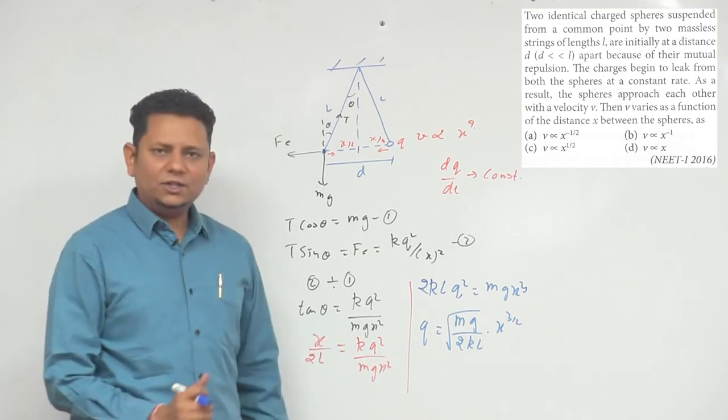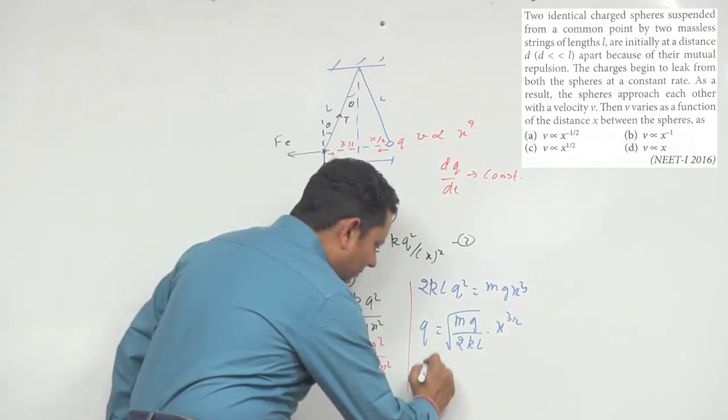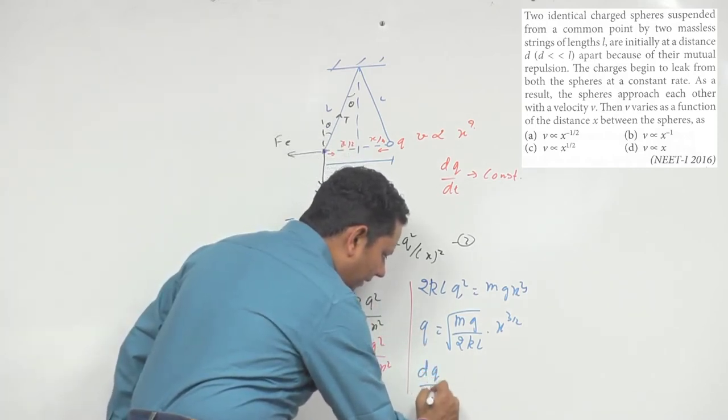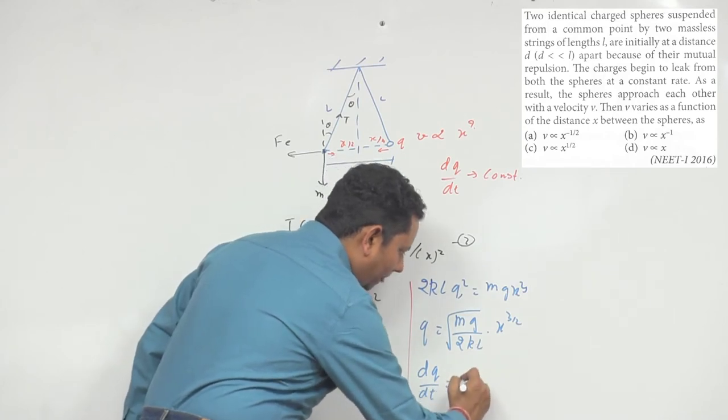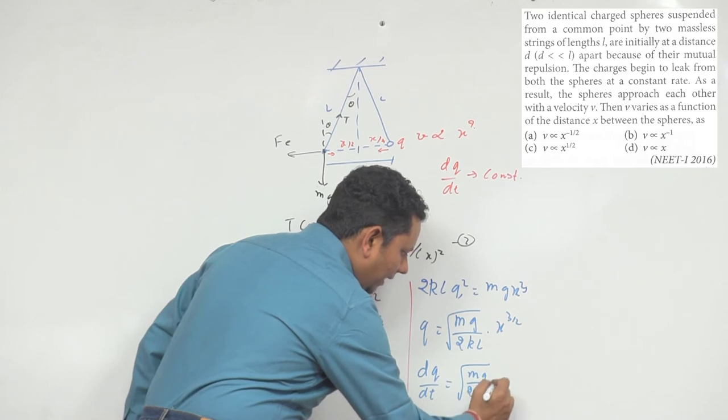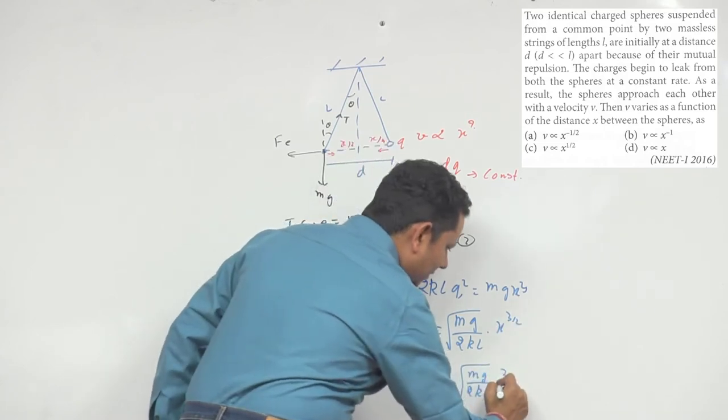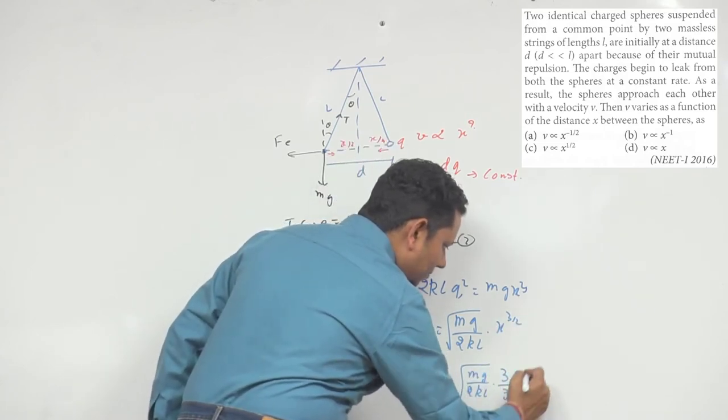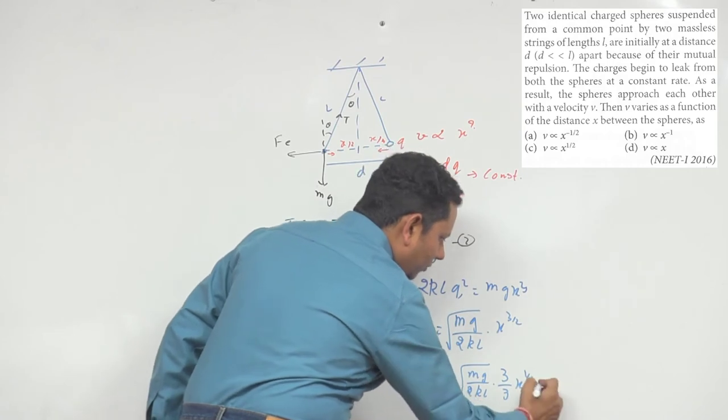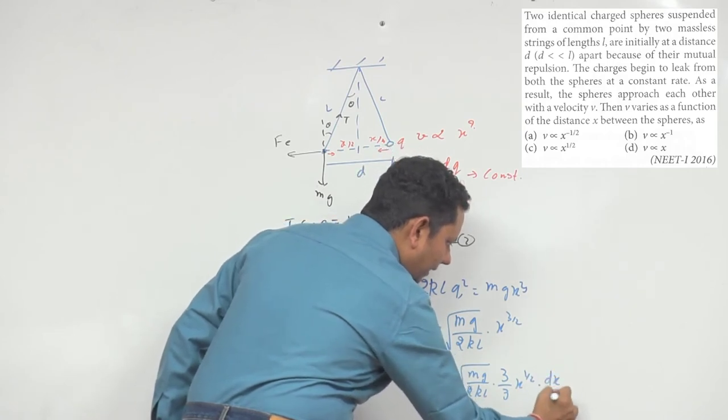Now if we put it together and differentiate, then left hand side will become dq divided by dt will be equal to this constant mg divided by 2kl multiplied by 3 by 2 x to the power 1 by 2 multiplied by dx by dt.